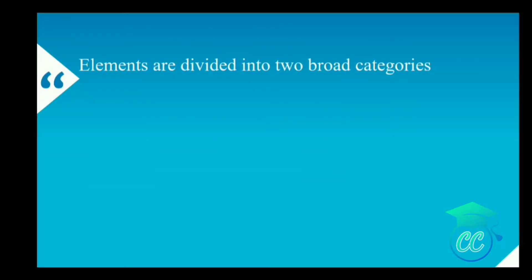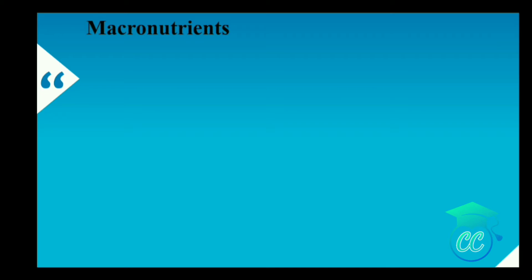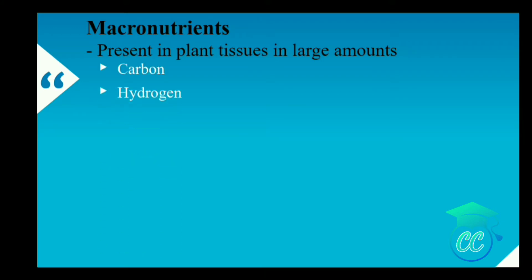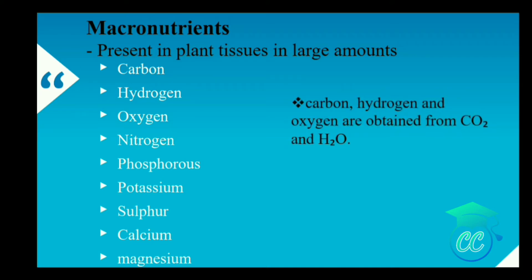Elements are divided into two broad categories: macronutrients and micronutrients. Macronutrients — from the word it is clear that macro means they should be present in large amounts. Macronutrients include carbon, hydrogen, oxygen, nitrogen, phosphorus, potassium, sulfur, calcium and magnesium. Here carbon, hydrogen and oxygen are called non-mineral elements because they are obtained from carbon dioxide and water.